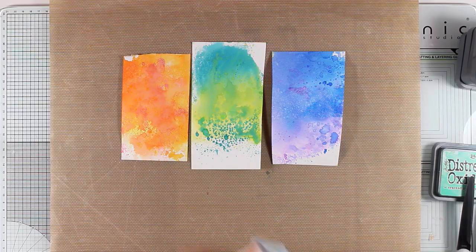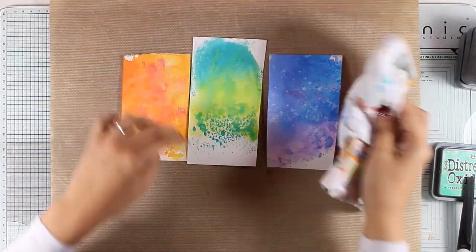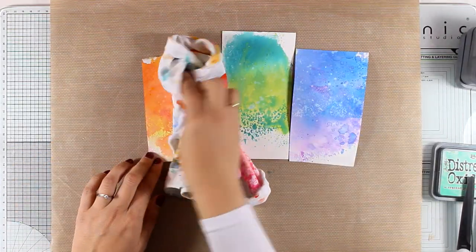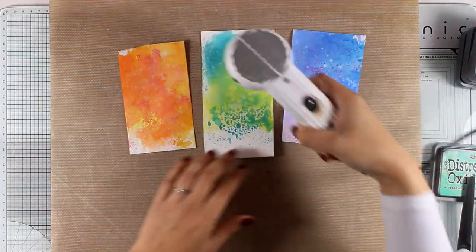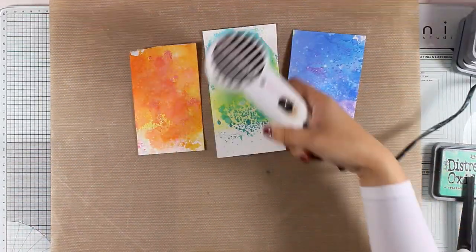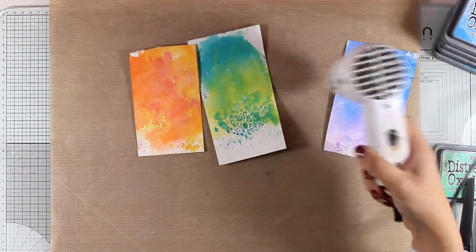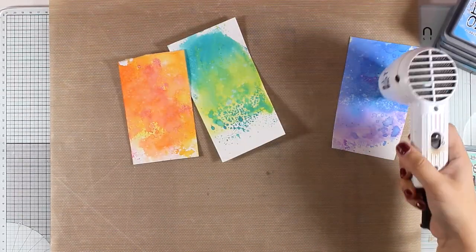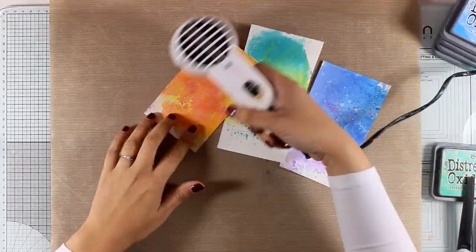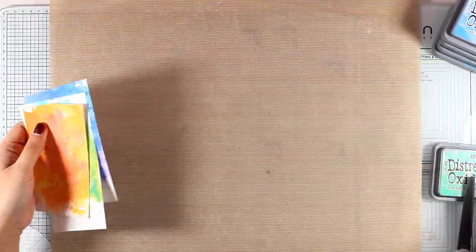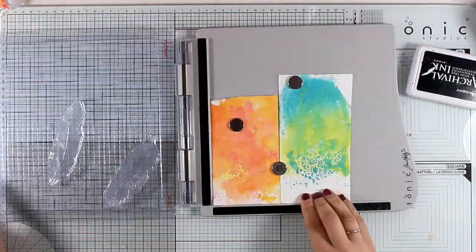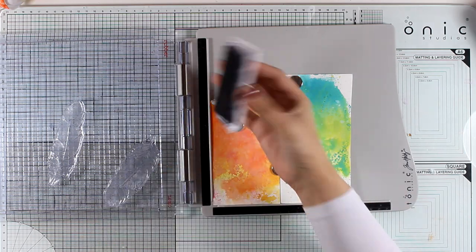For the last paper I used salty ocean and wilted violet. So here are all three of them. I'm just going to apply a little bit of water, do some splashes and then blot them with my cloth. Remember that in the sale I was talking about, you will find distress oxide inks on sale as well, so maybe you want to grab a couple of those to complete your collection.